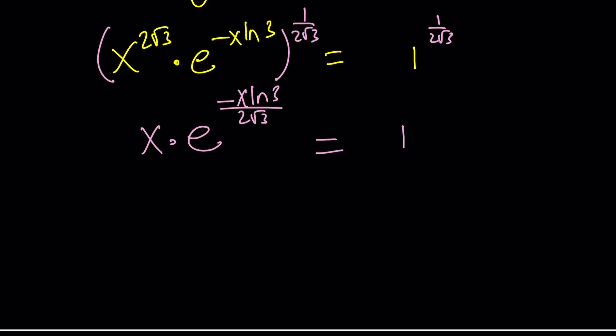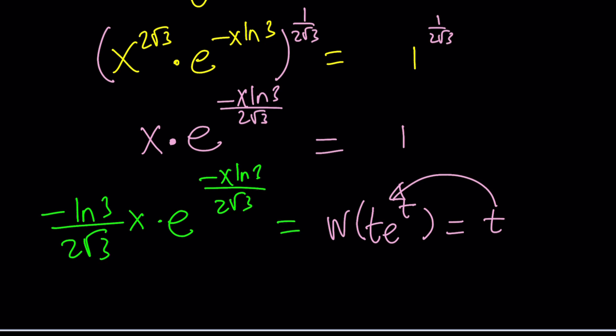Our goal is the following. We want to bring this to a t times e^t form so that when we apply Lambert's W function, that can give us t, which is the inverse function for t·e^t. Notice that we got the x here, which is good, but then we have x times something else. What we need to do next is multiply both sides by -ln(3)/(2√3), so you can get the same thing. On the right-hand side, we're going to get -ln(3)/(2√3).